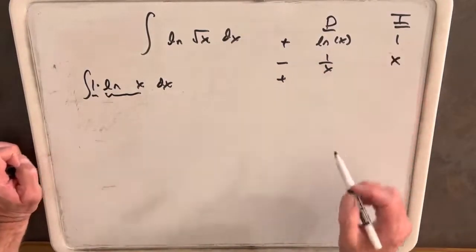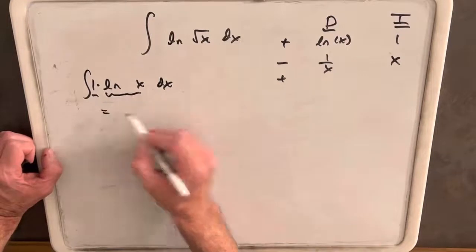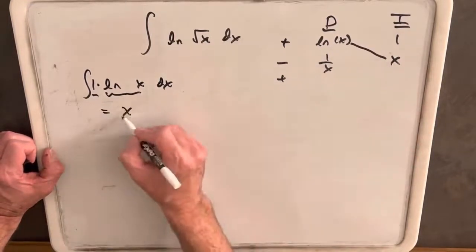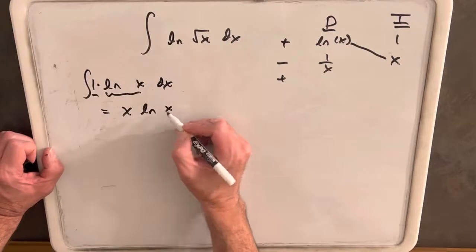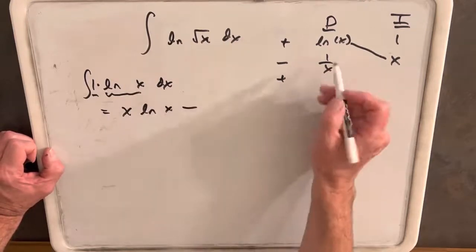So then, our answer to this is going to be, we just take this first diagonal, x ln of x, and then we subtract, and then we do this.